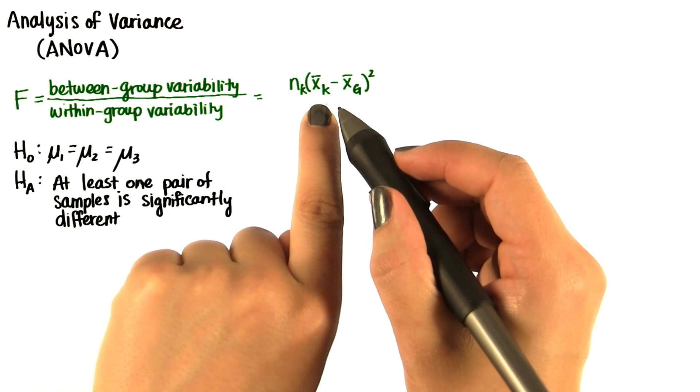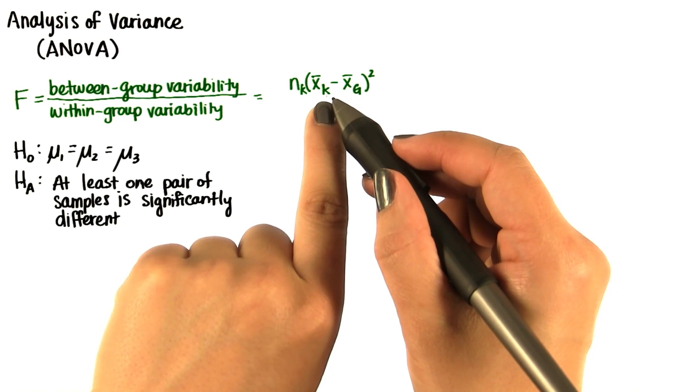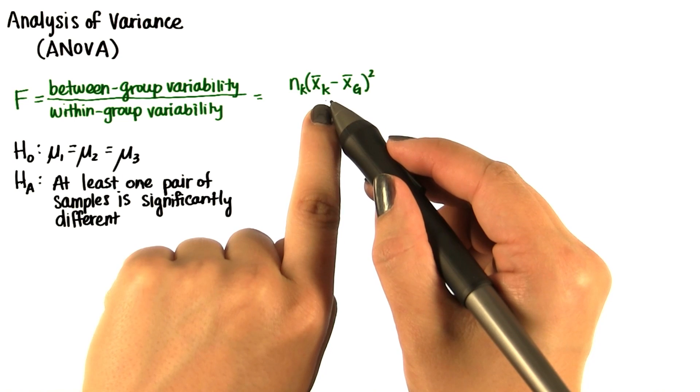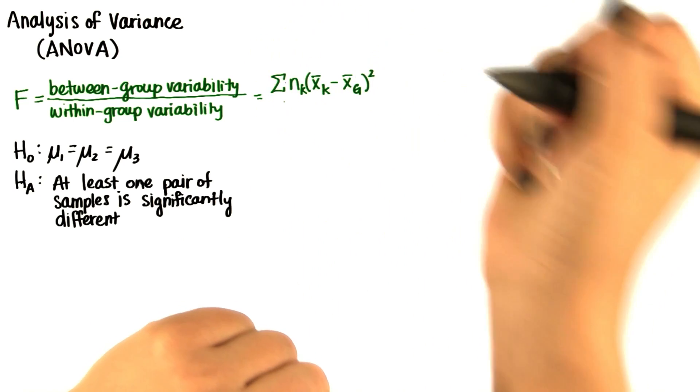Here, k represents the number of samples. That means we'll have k sample means, and then we'll add them all up.